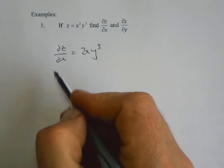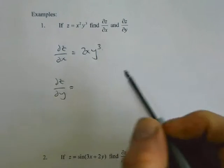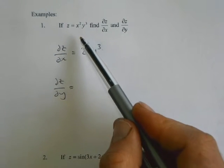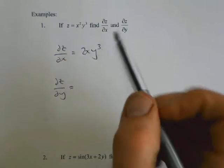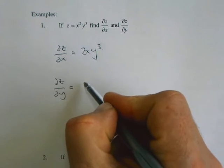And with the partial z partial y, again the same thing, except now x is the constant, so that's just a constant, and we're going to differentiate the y.